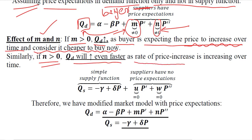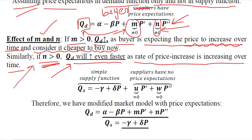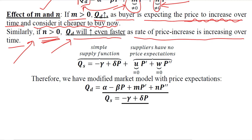Regarding coefficient n: if n is positive, quantity demanded will increase even faster as the rate of price increase is itself increasing over time, since n captures the rate of change of the rate of change. A positive n means the consumer expects prices to rise at an accelerating rate, creating a sense of urgency. He will therefore increase the quantity demanded even faster. This more meticulous analysis is enabled by the second derivative and its coefficient n.